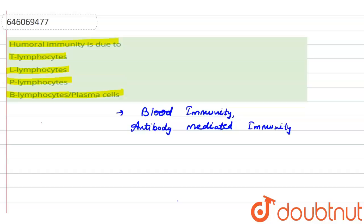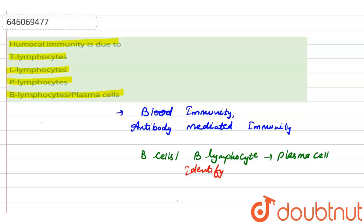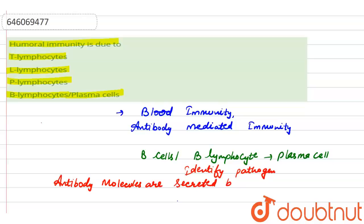In this type of immunity, B cells, or B lymphocytes, differentiate and produce plasma cells. These plasma cells help to identify harmful pathogens and kill them. Antibody molecules are secreted by B cells and plasma cells.